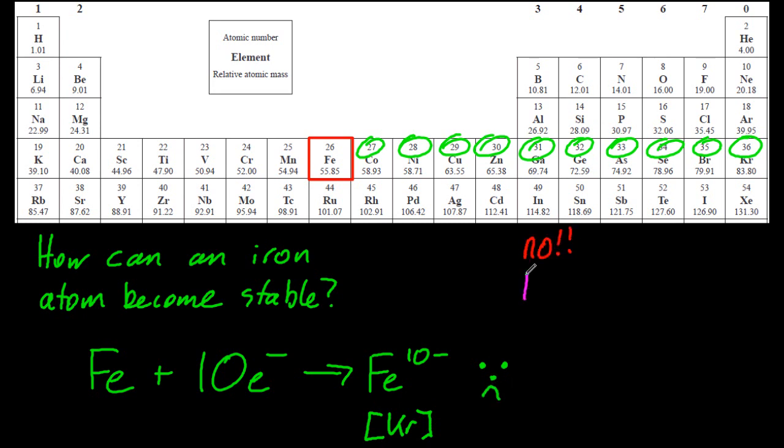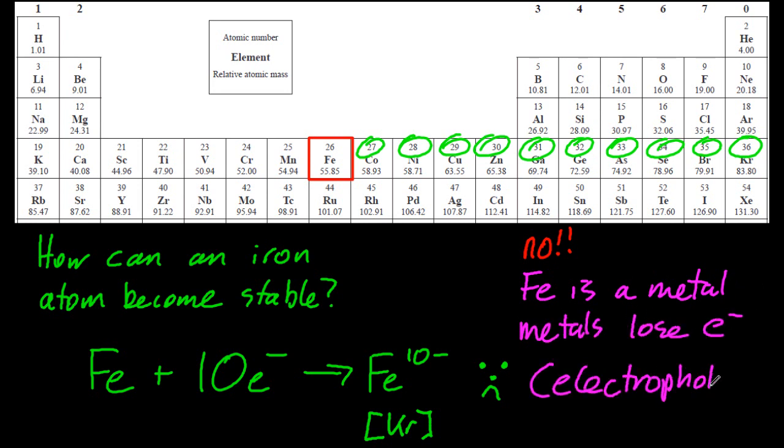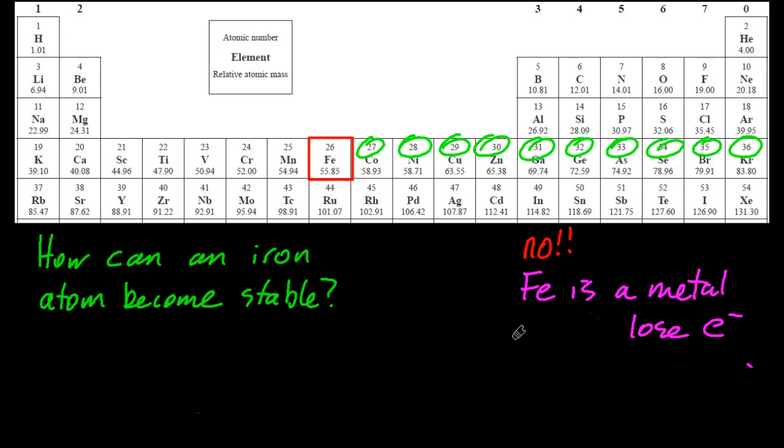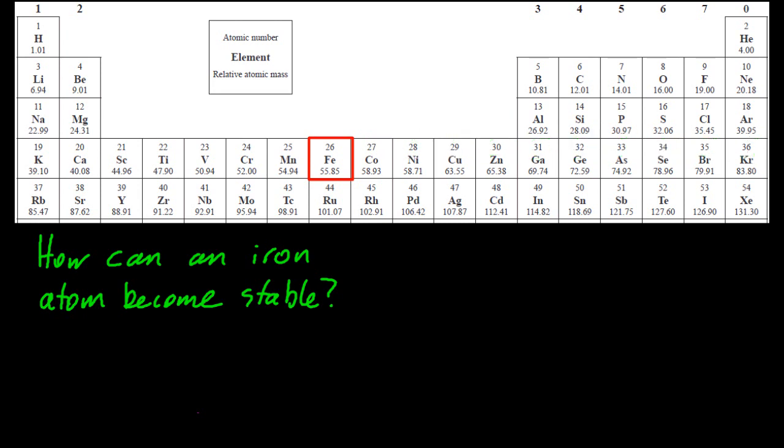Iron is a metal. Metals lose electrons because they're electrophobic, and we've just forced it to gain 10 electrons. No, no, no. That can't be what happens to iron to make it into an ion.